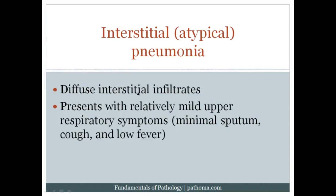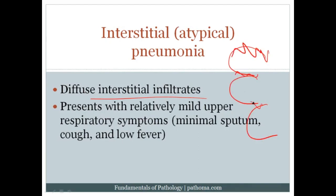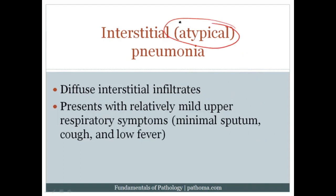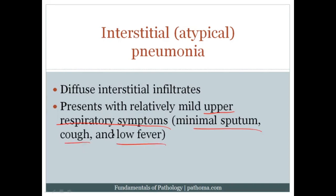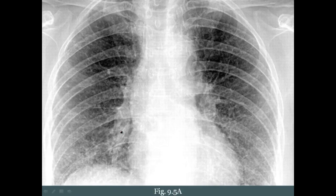The third pattern is interstitial pneumonia — diffuse interstitial infiltrates within the lung, with inflammation in the connective tissue of the alveolar air sac walls without major consolidation. It is also called atypical pneumonia. The word 'atypical' helps remember that signs and symptoms are relatively atypical: unlike classic pneumonia with high fever, chills, pleuritic chest pain, and elevated WBC, interstitial pneumonia presents with mostly upper respiratory symptoms, minimal sputum, cough, and low-grade fever. On X-ray, the interstitium is much more prominent with increased lung markings.